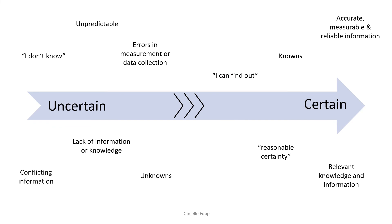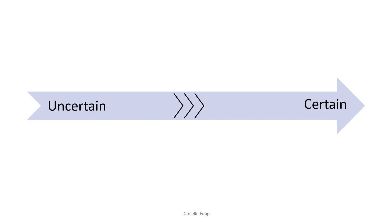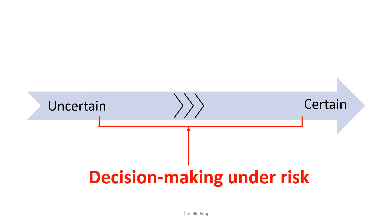Revisiting the certainty-uncertainty spectrum: both extremes are very unlikely in construction. Between these two extremes is decision making under risk. The degree of certainty and risk varies depending on how much knowledge you have. In construction projects and during a project appraisal, we need to understand that there may be an information gap which will impact the probability of an adverse event occurring. Bring this knowledge, along with your existing understanding of risk from other subjects, into this course.